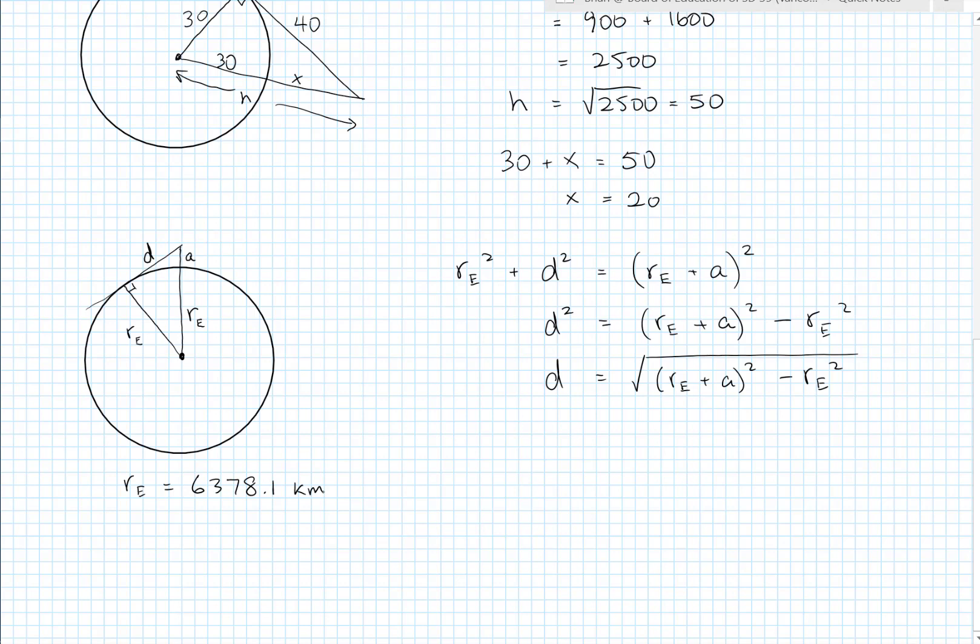Now that's the average radius of the earth. Obviously, you know, mountain ranges make things more complicated. And as I said, the earth is not a perfect sphere. It actually is called an oblate sphere, which means it's kind of been flattened at the poles. But for our purposes, this is going to be good enough.